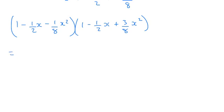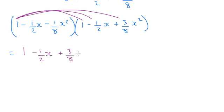So I'm going to multiply the 1 by these three things. So 1 times 1 is 1. 1 times minus a half x is minus half x. And the 1 times the 3 eighths x squared there.